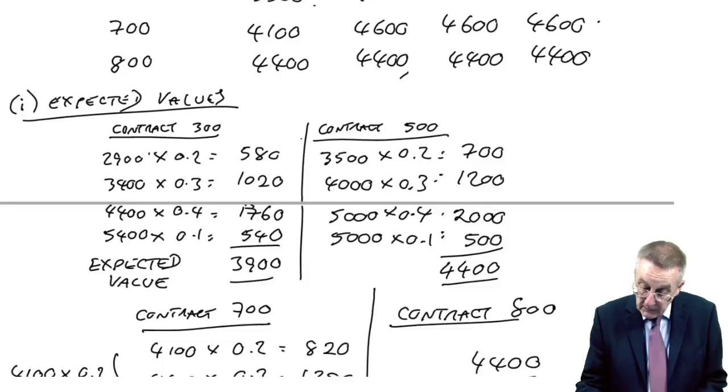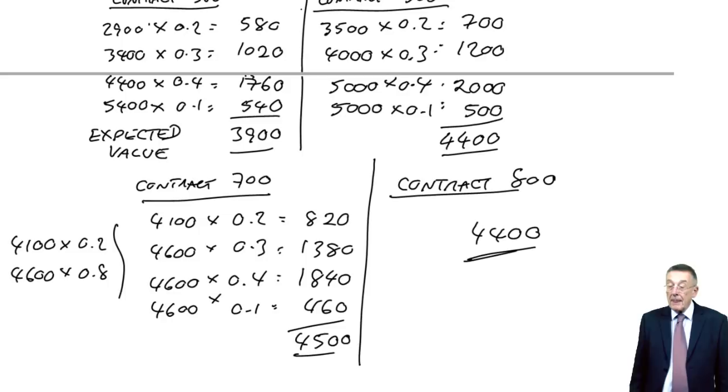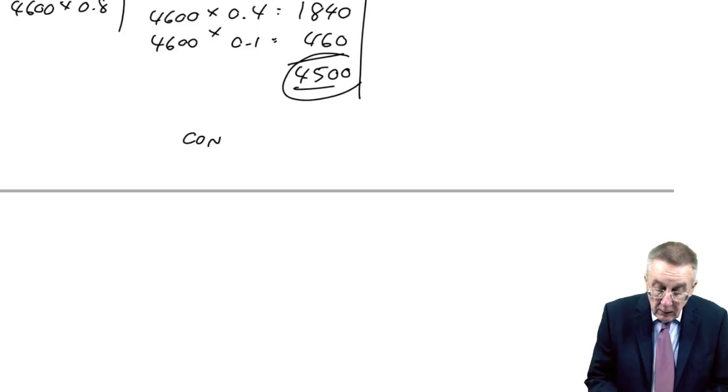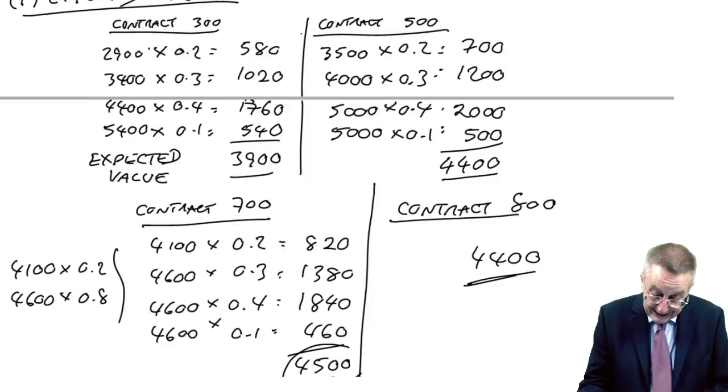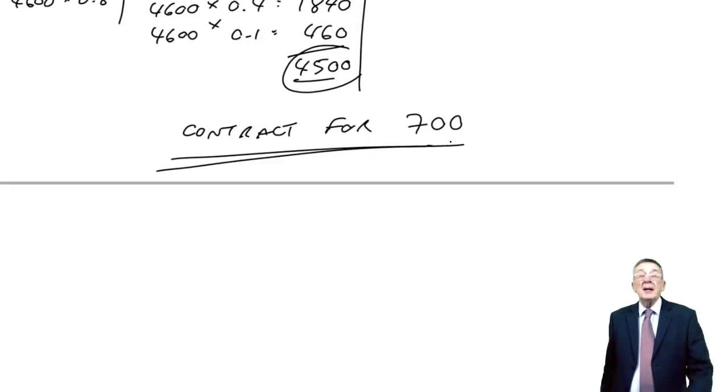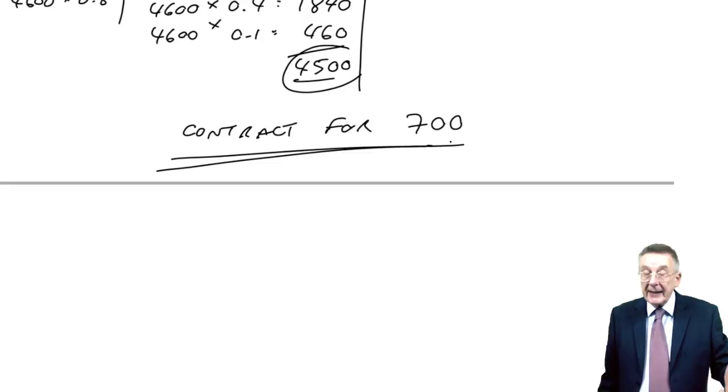Having got the expected values, or what you might call the average, whichever is the highest, is the best. The highest is 4,500. And therefore, we'll sign a contract for 700. And so there, you've got the four ways. Maximin, maximax, minimax regret, expected values. And for the last time, there is no best way. You do what you're told.